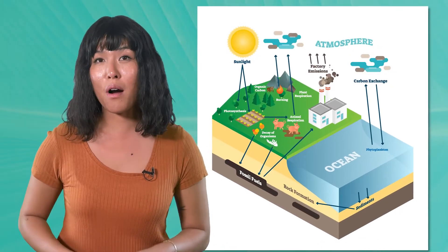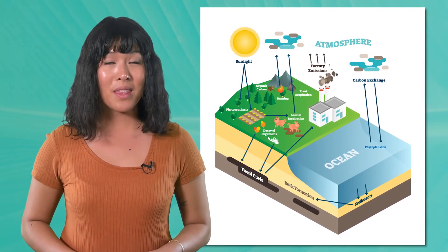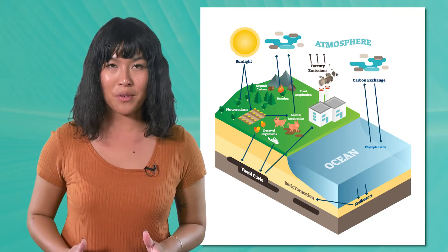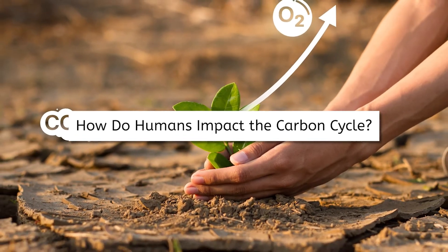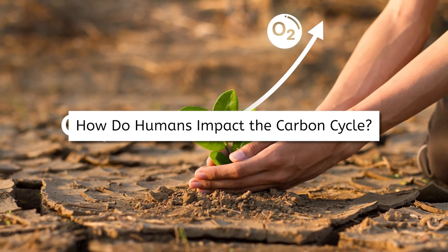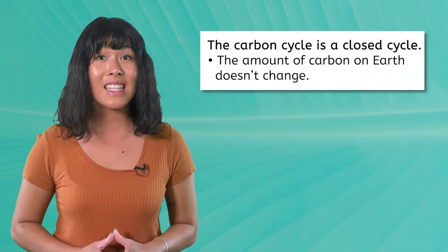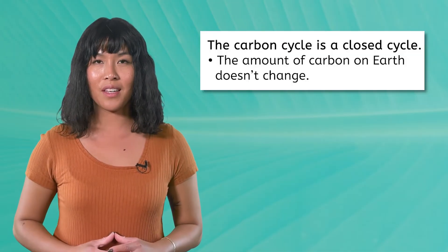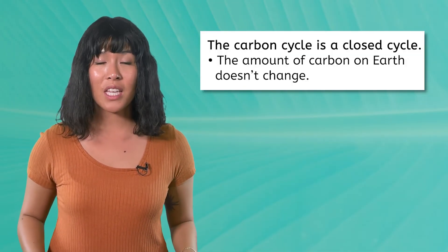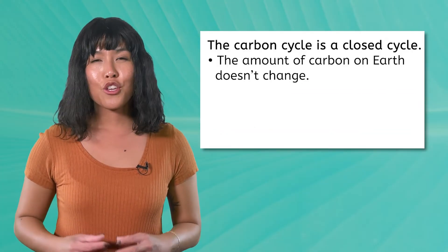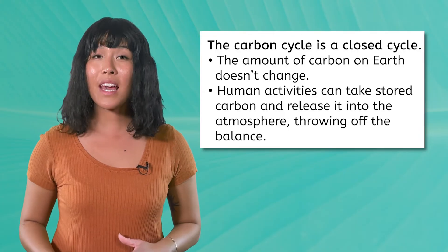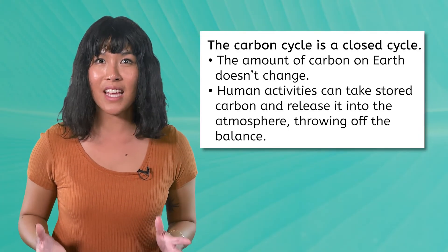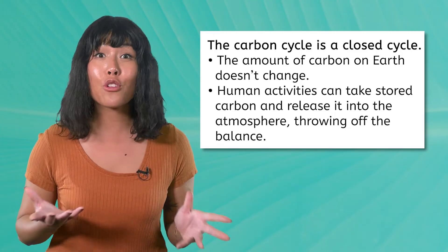Just like the water cycle, this cycle doesn't move in only one direction. Carbon can cycle through different forms at different times — it moves quickly through the biosphere and slowly through the geosphere, and it sometimes sits in the atmosphere and hydrosphere for a long time. The carbon cycle is a closed cycle: the amount of carbon in the cycle doesn't change, even as the carbon changes forms. Human activities can't add brand new carbon to this cycle, but we can take stored carbon and release it into the atmosphere, throwing off its overall balance.